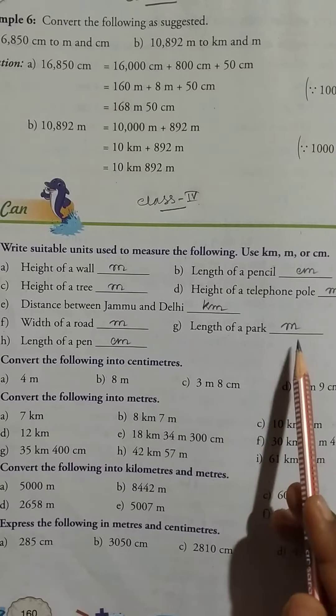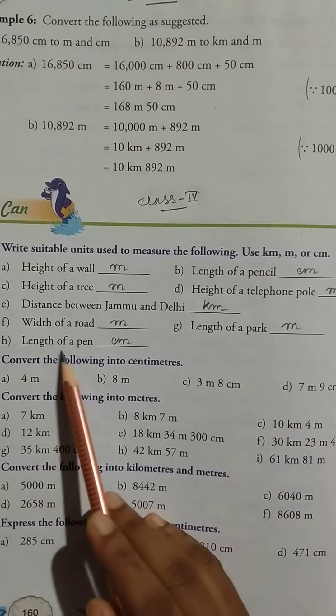Small park: meter. Then length of a pen: centimeter.